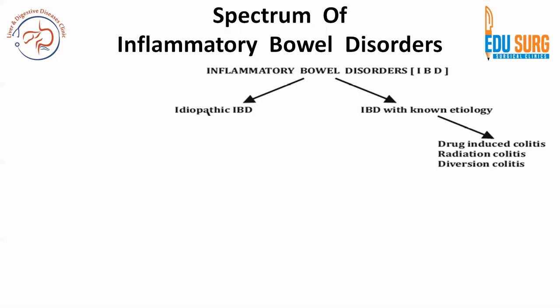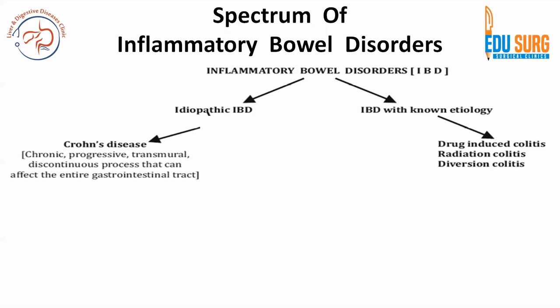On the other side, you can have idiopathic inflammatory bowel disorder. In this category, a transmural, discontinuous process in any part of the GIT that is chronic is Crohn's disease. Each word is important in this definition: it is an idiopathic inflammatory bowel disorder which is chronic, progressive, transmural, and discontinuous — a process that can affect the entire gastrointestinal tract.